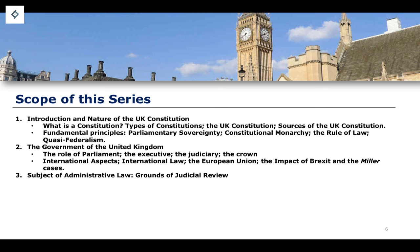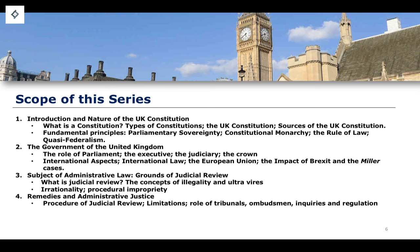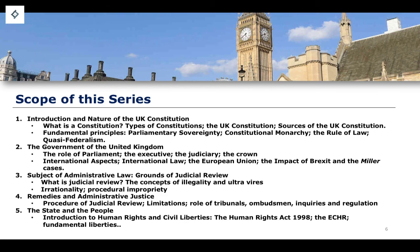After that, we'll move on to administrative law, beginning with the grounds for judicial review — looking at what judicial review is, the concept of illegality and ultra vires, irrationality, and procedural impropriety. We'll then talk about remedies and administrative justice, the procedure of judicial review, limitations, the role of tribunals, the ombudsman, inquiries, and regulation. The final topic, which will probably be the favourite to teach, covers the relationship between the state and the people — introducing human rights and civil liberties, the Human Rights Act, the European Convention on Human Rights, fundamental liberties, police powers, emergency powers, and public order offences and terrorism.